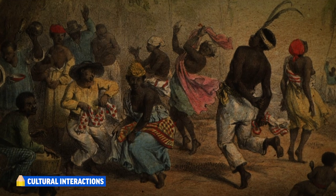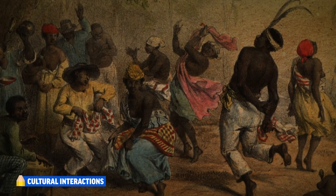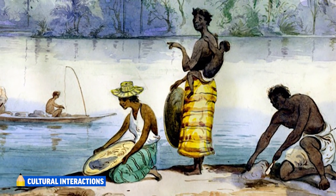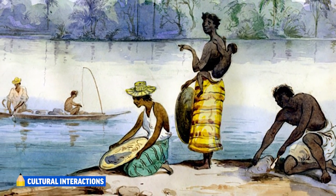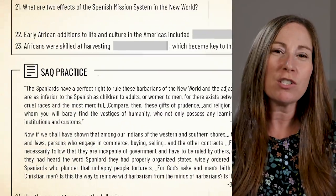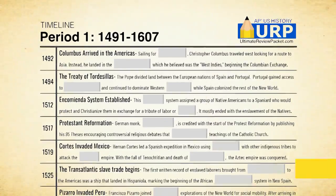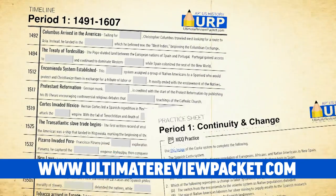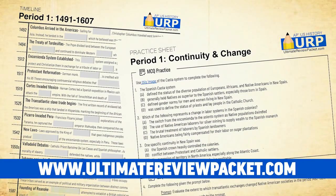African culture also impacted the New World. Early African contributions include rhythmic styles of music and dancing, and Africans were skilled at harvesting rice, which became a key cash crop for later colonies. That's a quick walkthrough for Period 1 — now see if you can answer the practice questions at the end of your study guide, and check out the timelines and practice sheets for more help. Thanks for watching.